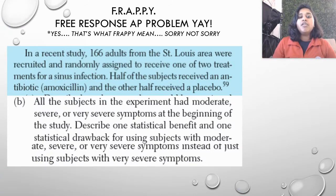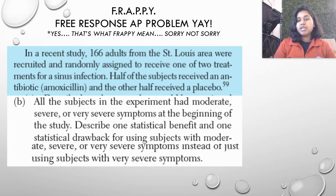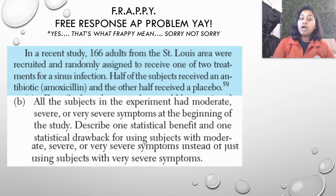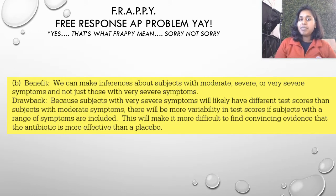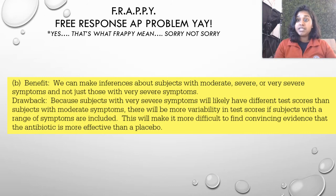Here's the same information looking at question B. All the subjects in the experiment had moderate, severe, or very severe symptoms from the very beginning of the study. Describe one benefit and one drawback for using subjects with moderate, severe, or very severe symptoms versus using subjects with only very severe symptoms. The benefit: we can make inferences about subjects with moderate, severe, or very severe symptoms — we just cannot make inferences about those with only very severe symptoms. We can make an inference about people with sinus infection symptoms from moderate to very severe.